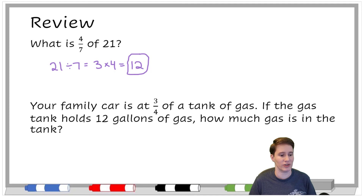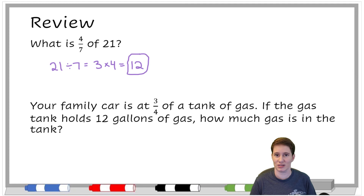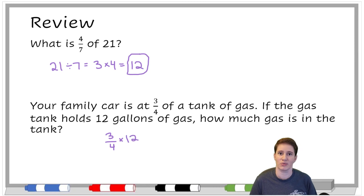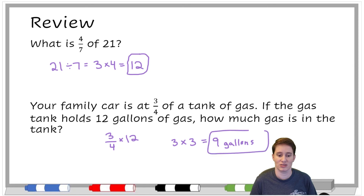Here I've got a word problem: your family car is at three-fourths of a tank of gas. If the gas tank holds 12 gallons of gas, how much gas is in the tank? This is actually something that might be helpful to know in real life — figuring out how much gas we have or how much it costs to fill up the rest. To figure this out we say: what is three-fourths of 12? If I divide 12 into four groups, that's 12 divided by 4, which is 3. Then 3 times 3 is 9. So we have 9 gallons in our gas tank, which means we have room for three more gallons.